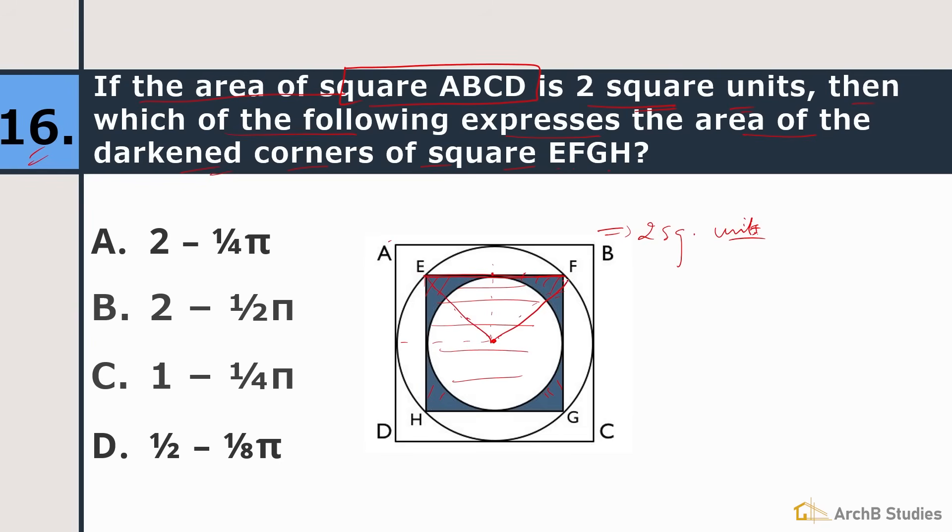If we have this length, we can find out the area of EFGH. Now this length will be equal to this length. Why? It is the radius of this circle. And this length is the half of AD. So AD will be equal to root of 2. Why? Because 2 is the area of ABCD. So AD is root 2. Now this length, let's say O. This length will be equal to this length. So OE will be equal to half of AD. That is root 2 divided by 2. That is 1 by root 2. Now we know OE. 1 by root 2.